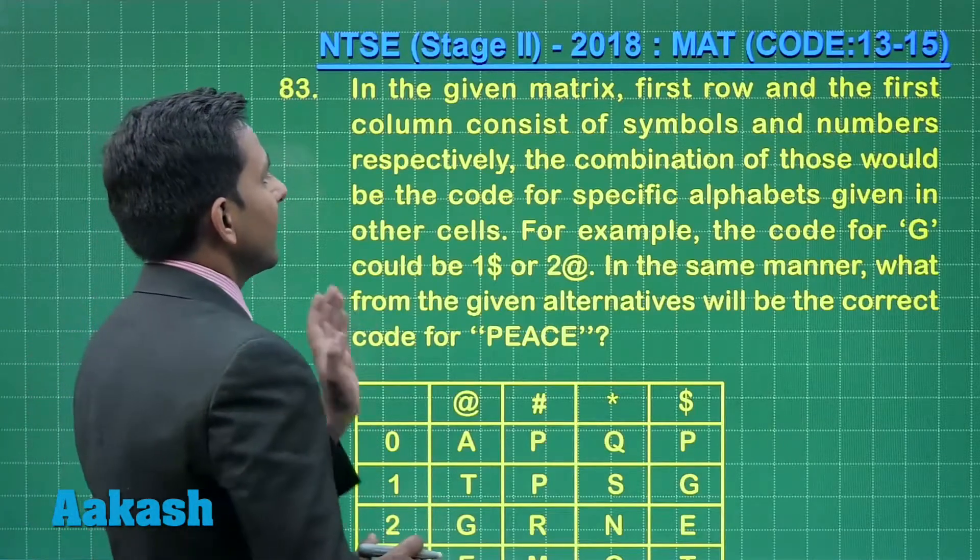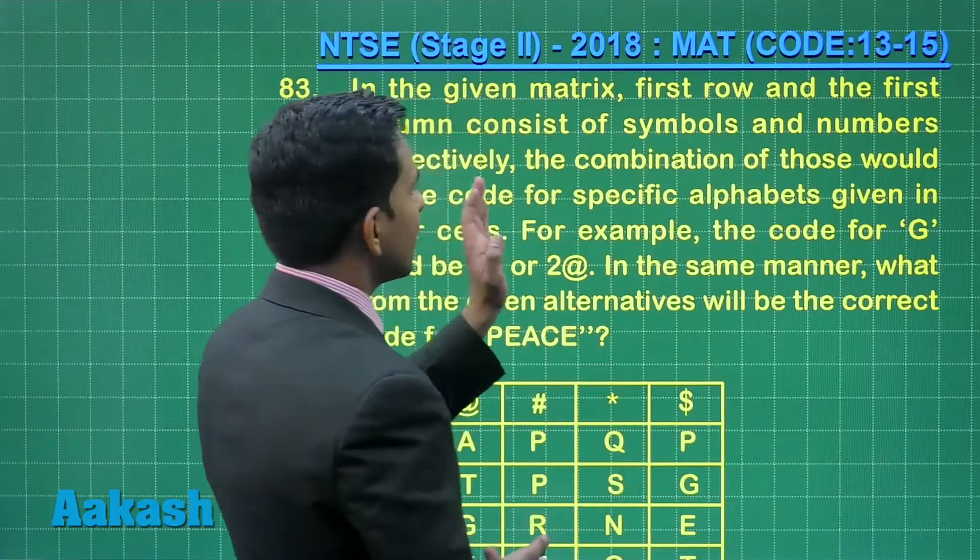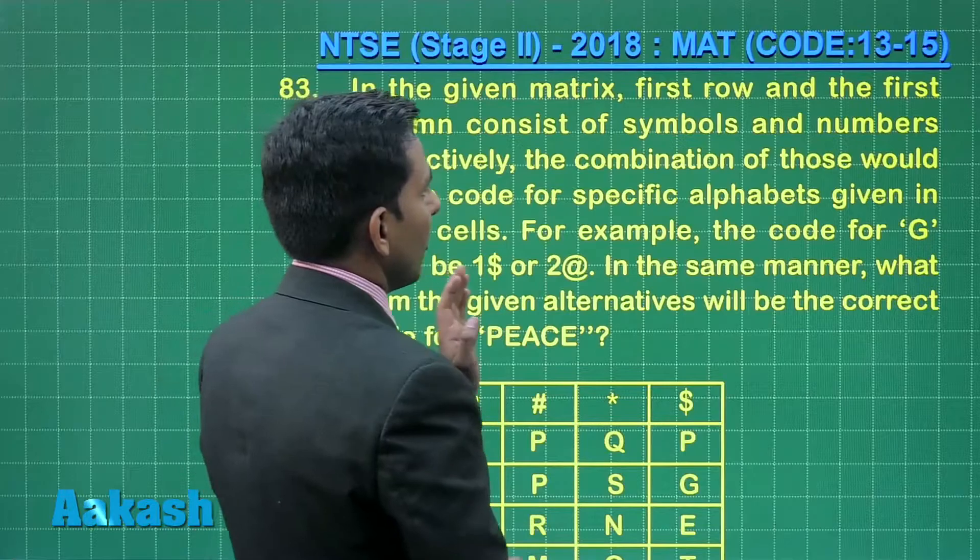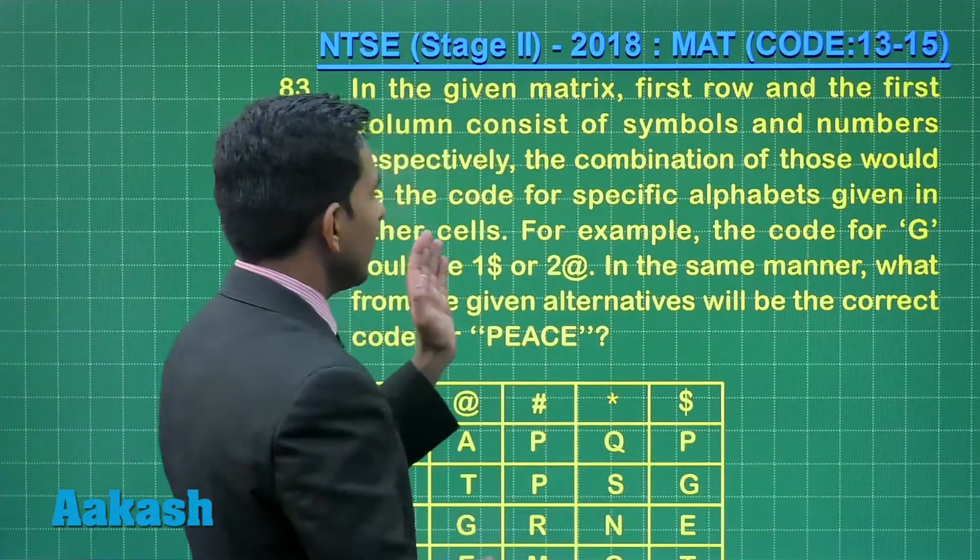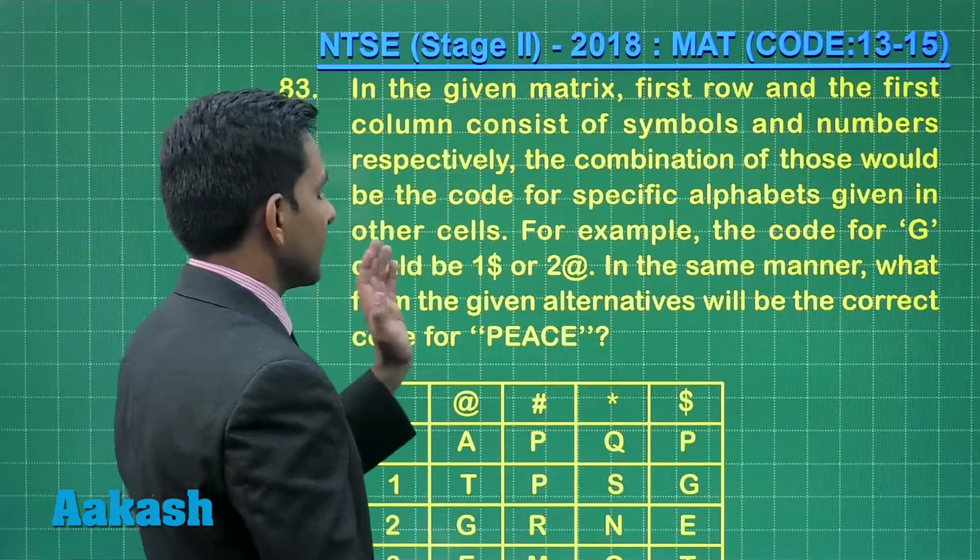Let us take question number 83. In the given matrix, first row and the first column consist of symbols and numbers respectively. The combination of those would be the code for specific alphabet given in other cells.